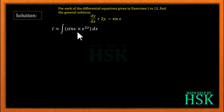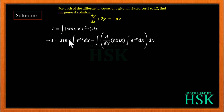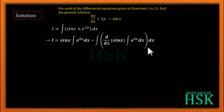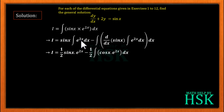Applying integration by parts, I take sin x as the first function and e^(2x) as the second function. So I = sin x · ∫e^(2x) dx − ∫[d/dx(sin x) · ∫e^(2x) dx] dx. The integration of e^(2x) is (1/2)e^(2x), so I get sin x · (1/2)e^(2x) − ∫cos x · (1/2)e^(2x) dx, where the 1/2 is taken outside the integral.